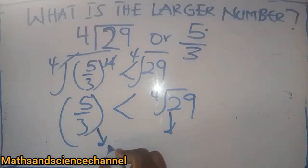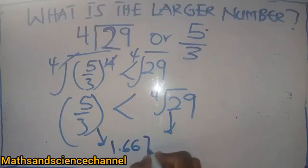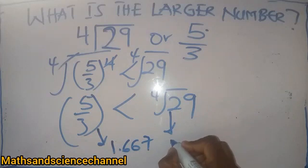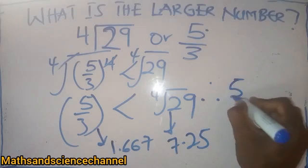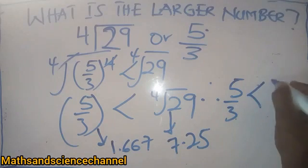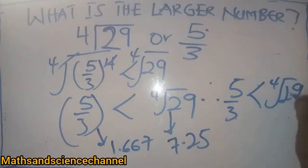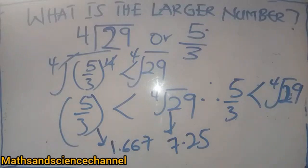3 will just give us 1.667, and then the fourth root of 29 will give us 7.25. So therefore we have 5 over 3 being less than the fourth root of 29 in this case. Thank you very much